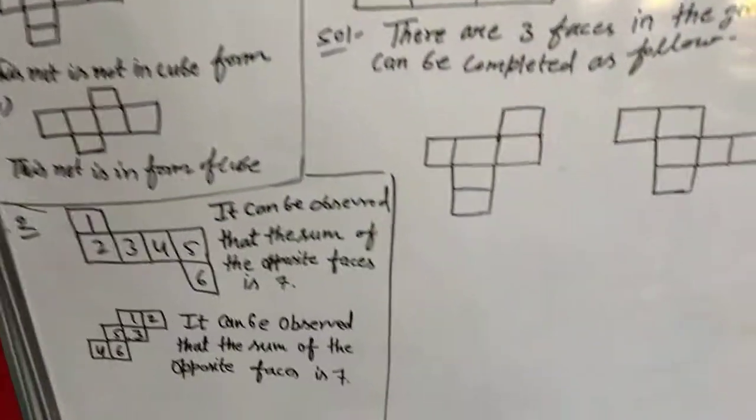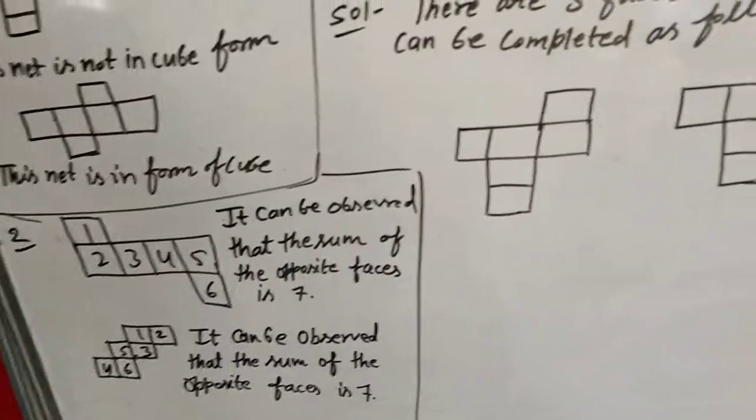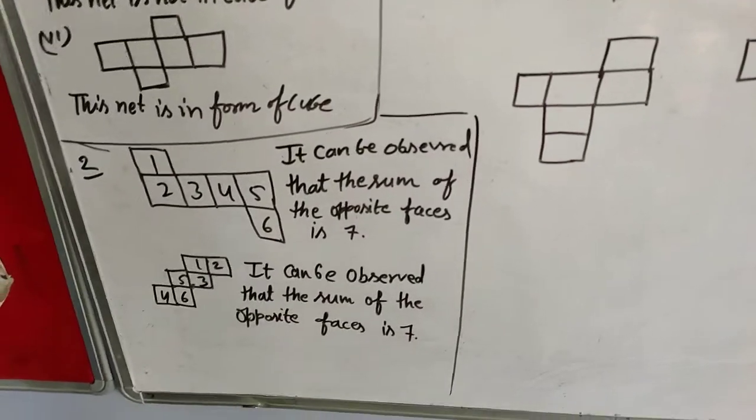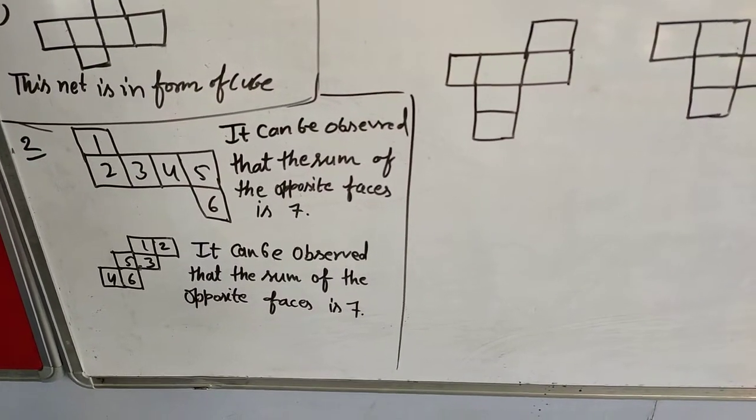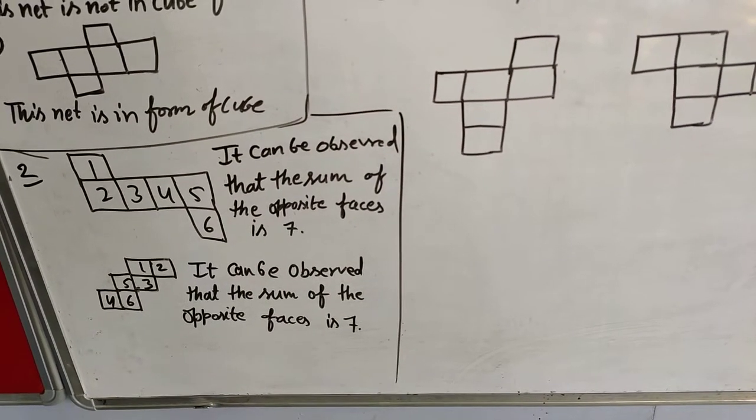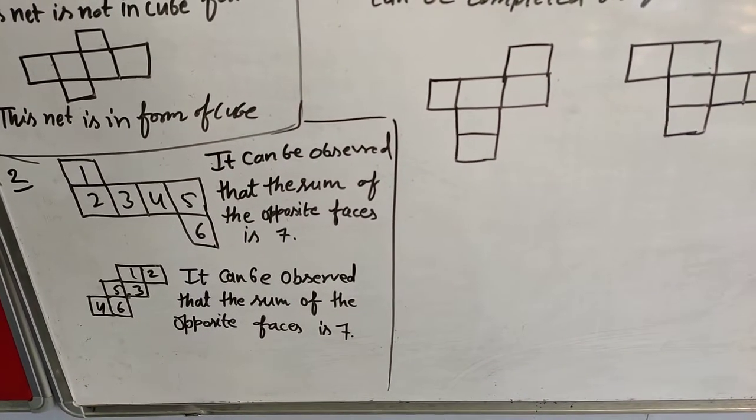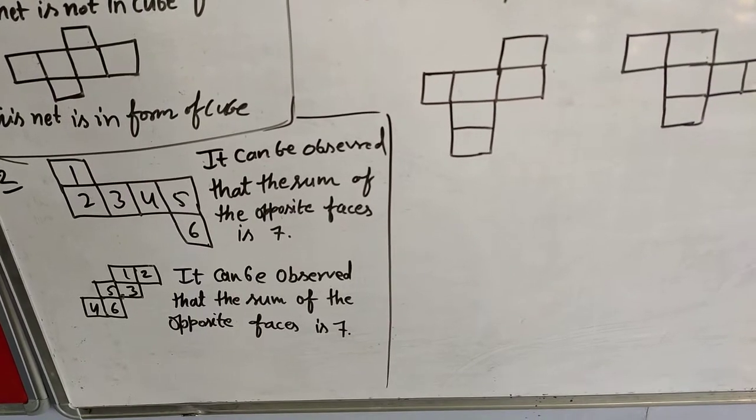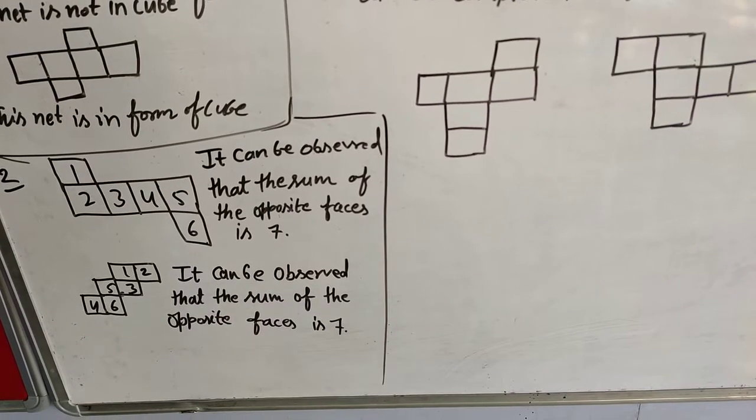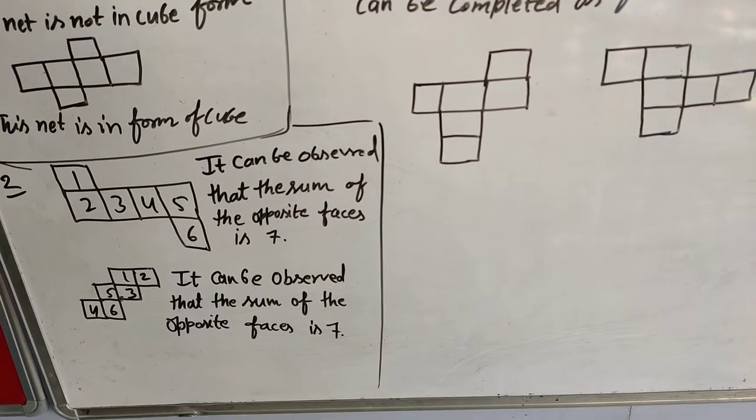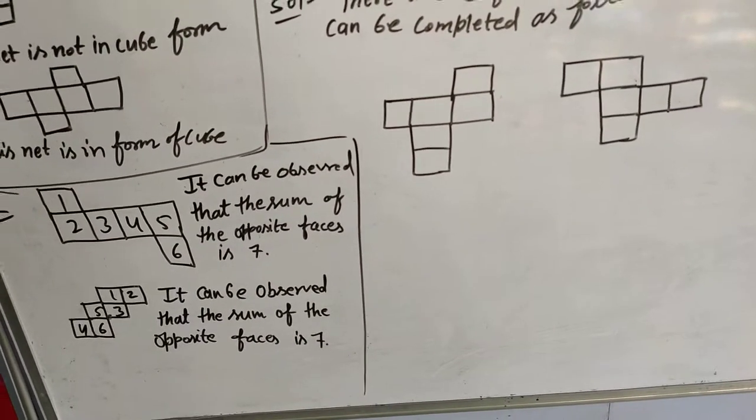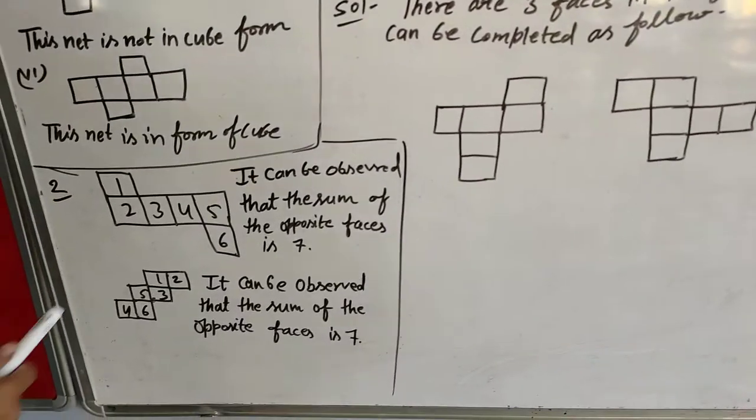Now question number 2. Dice are cubes with dots on each face. Opposite faces of a dice always have a total of 7 dots on them. Here are two nets to make dice. The numbers inserted in each square indicate the number of dots in the box. Insert suitable numbers in the blanks, remembering that the numbers on opposite faces sum to 7.